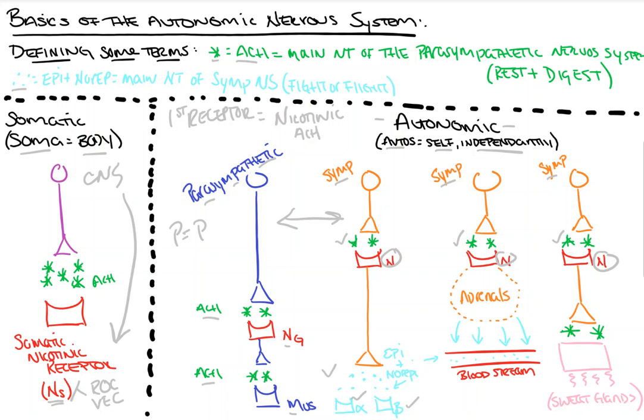Epinephrine is also called adrenaline, and it does exactly what you'd expect: it increases your heart rate, causes bronchodilation, and dilates your eyes — all to get you ready to fight or run away. It also makes sense that the sympathetic nervous system innervates the adrenal glands, which sit on top of the kidneys. This is where your epi and norepi is made. Sympathetic stimulation via that nicotinic receptor and acetylcholine will cause the adrenals to dump epi and norepi into the bloodstream to get it out to your tissues.